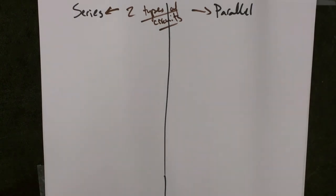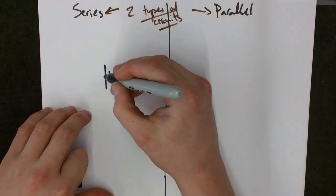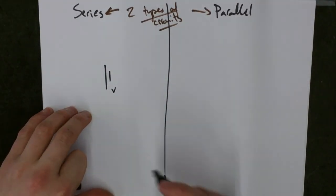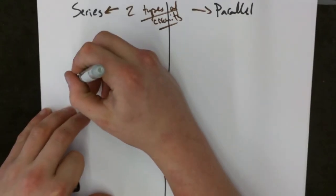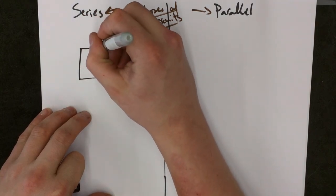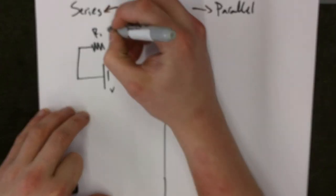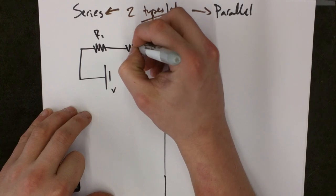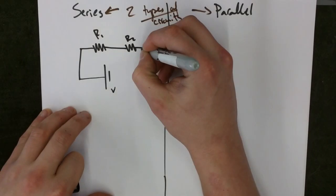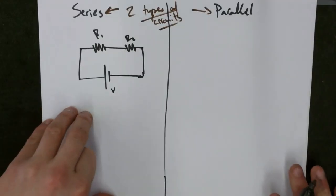We'll start with series. A series circuit would look something like this. Here I've got my battery, which is producing some voltage. I've got a resistor. I'll call it R1 and R2. I'll connect it up into a closed circuit.